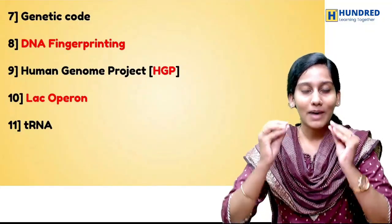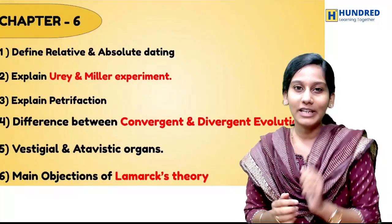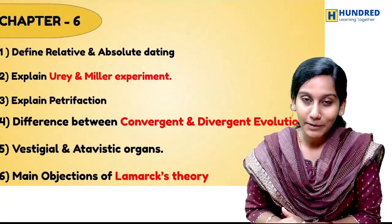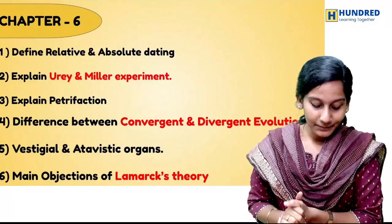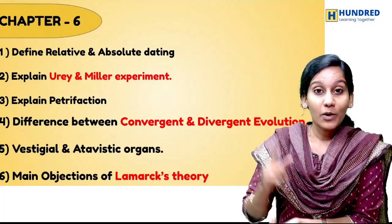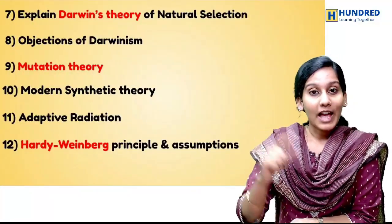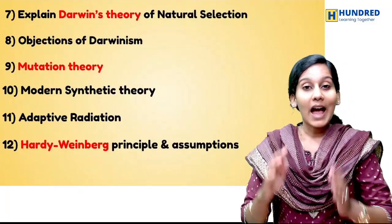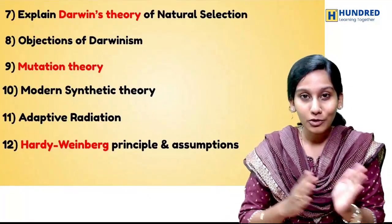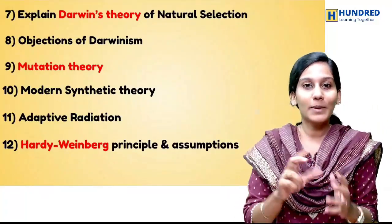In Chapter 6, the genetics chapter on Evolution, you might expect 2 or 3 mark questions. Topics include relative and absolute dating, Urey and Miller experiment along with the diagram, the difference between convergent and divergent evolution, vestigial and atavistic organs, objections to Lamarck's theory, Darwin's theory, mutation theory, adaptive radiation, and very importantly, the Hardy-Weinberg equilibrium. You can expect 2-mark, 3-mark, 5-mark, or even 1-mark questions on small topics.